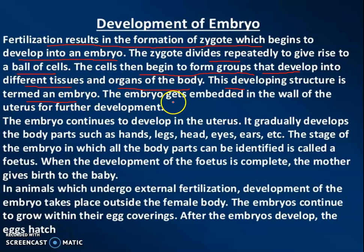The embryo gets embedded in the wall of the uterus for further development. The embryo moves to the uterus and gets attached to its wall, where it continues to develop.